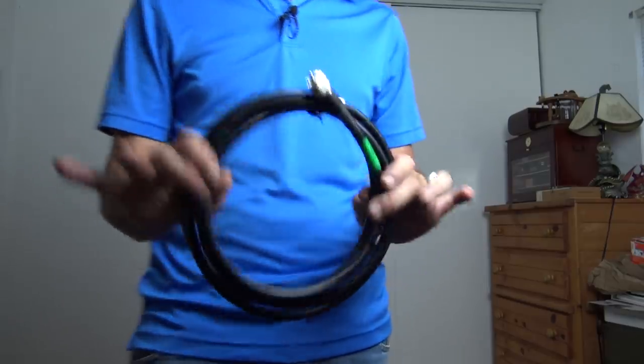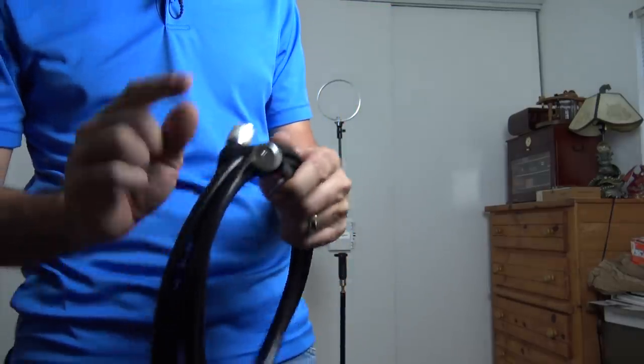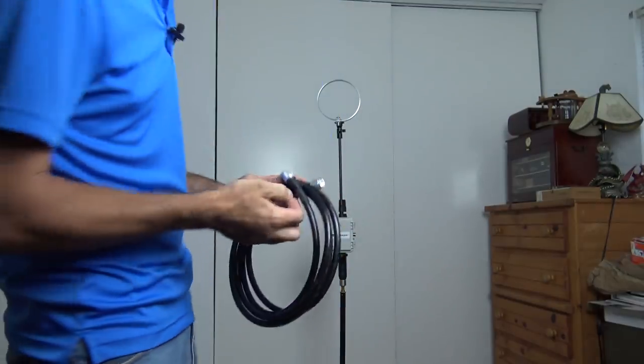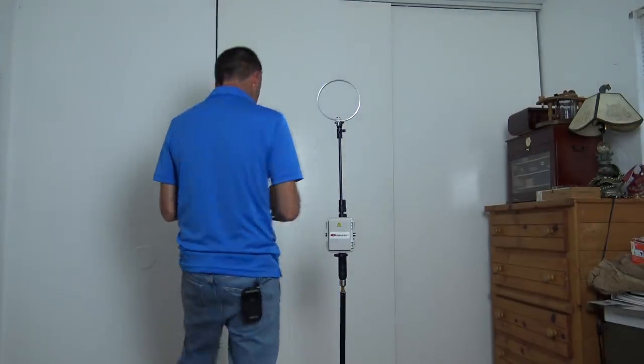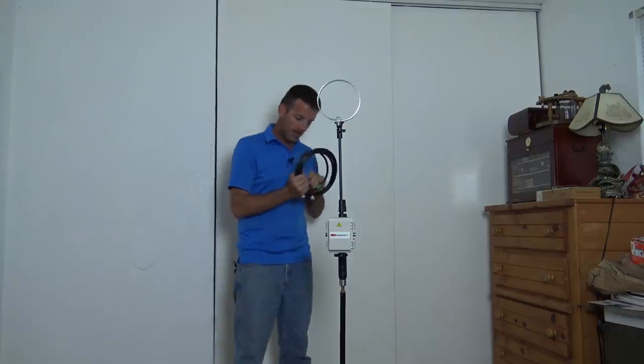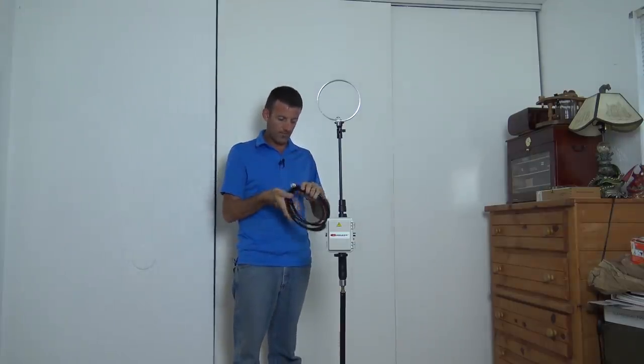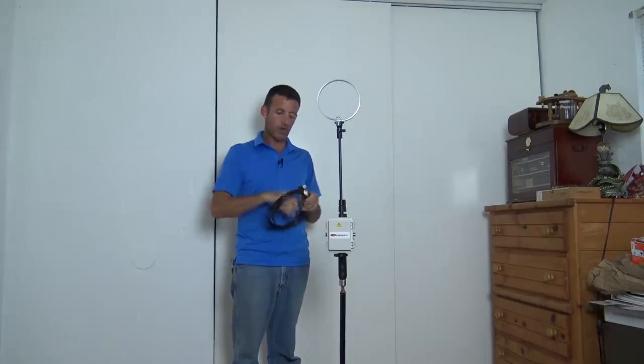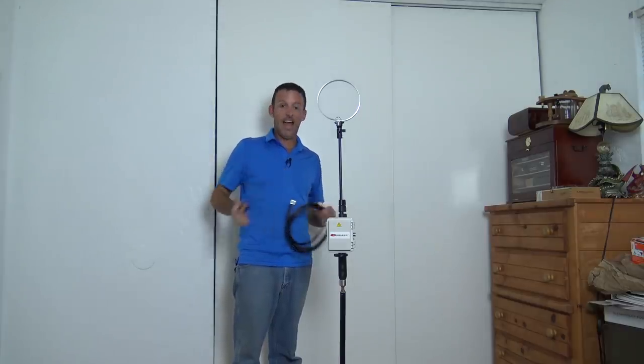And they do say that they use the most optimal PL259s on the end with the highest grade crimp tool that they have to make sure that these ends are crimped as tight and as perfect as they can get them. That does make a difference in this loop. On this loop here, this coax, you have a Velcro strap that is not only to hold this in this form.